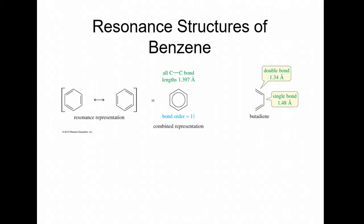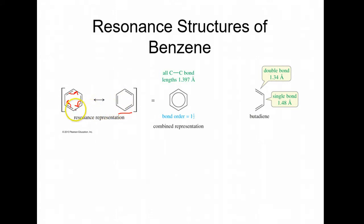Aromatic rings have resonance. The pi bonds can resonate around — this pi bond can come over here, which kicks that pi bond over there, which kicks that one to give you this structure, which is the same structure as the first one. It's just your pi bonds are in a different spot. As a shorthand — a combined representation — you draw a circle inside the six-membered ring.